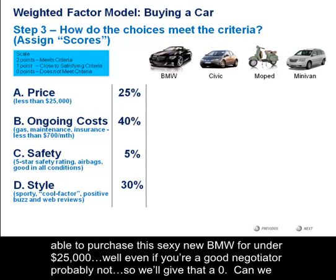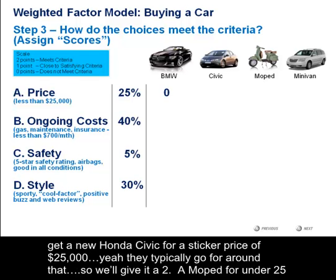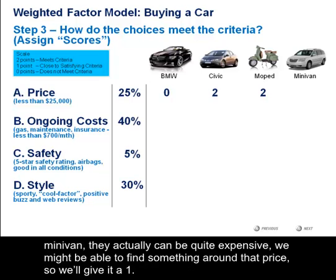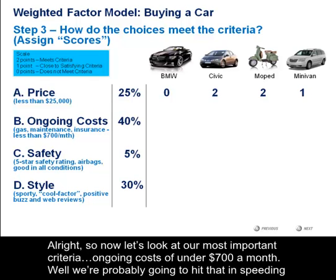So let's see how we do against the price criteria. Will I be able to purchase this sexy new BMW for under $25,000? Well, even if you're a good negotiator, the answer is probably not — so we're going to give that a zero. Can we get a new Honda Civic for a sticker price of $25,000? Yeah, they typically go for around that, so we're going to give it a two. A moped for under $25,000? For sure — we could probably get five of them, one color for each day of the week based on our budget, so let's give that a two as well. And as for a minivan, they actually can be quite expensive — we might be able to find something around that price, so we're going to give it a one because it's close.